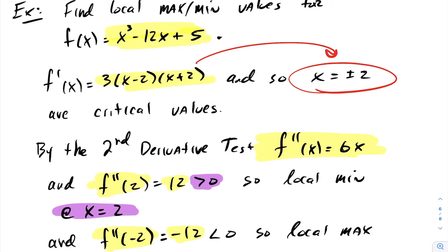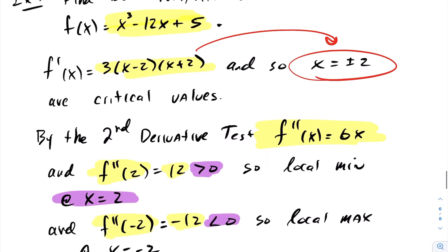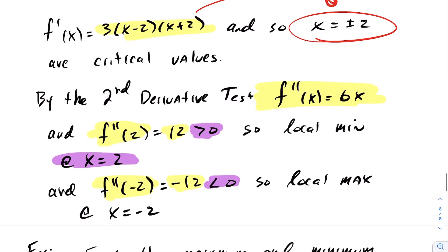We see that f double prime is greater than zero at 2, and we therefore have a local minimum at 2. On the other hand, f double prime at negative 2 is less than zero, and because of that we have a local maximum at negative 2. Using the second derivative test applied at the critical points, we can determine local minima or maxima without having to analyze the intervals of f prime.